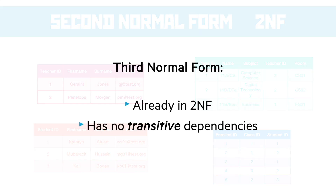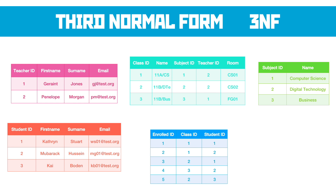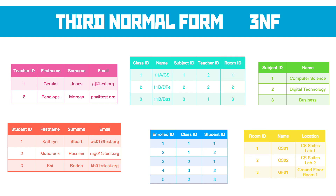Third normal form takes second normal form and removes transitive dependencies — where we're storing information that could duplicate. For instance, in the class table the subject should really be a separate thing because there could be multiple computer science lessons in year 11 or multiple business lessons in year 11. We don't see any repetition in this data set at the moment, but there could be, so that's a transitive dependency. We take that out and create it as its own table, linked with an ID. There's also another transitive dependency: the room will probably be repeated across classes. So we take those out and put the room in a separate table. The class table now has a specific room, specific subject, and specific teacher, all linked and only typed in once. That's your third normal form database.